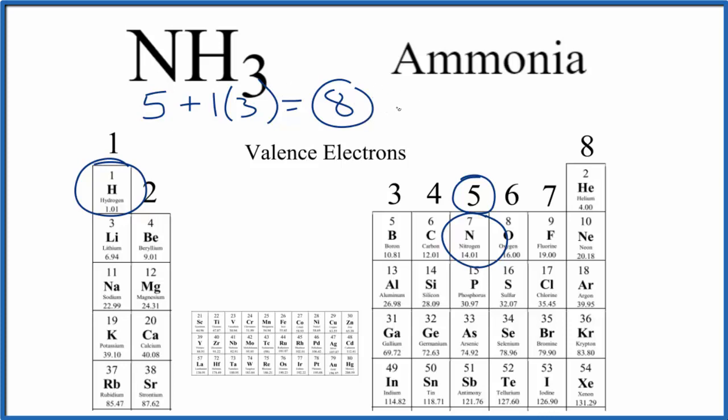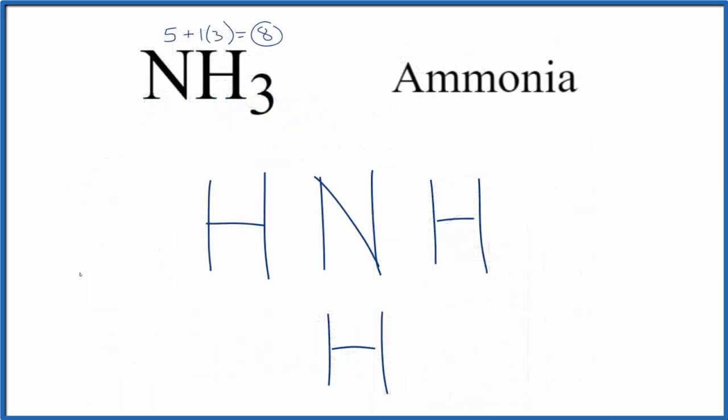Now we can write the structure with those covalent bonds. We have eight valence electrons, we put them between the atoms, and that's going to form that covalent bond. We've used six, and then we put the last two up here on top of the nitrogen.